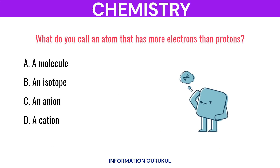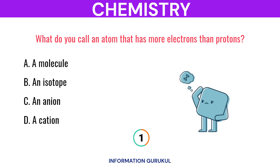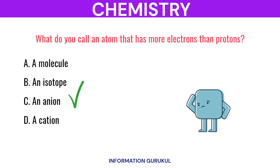What do you call an atom that has more electrons than protons? An anion.